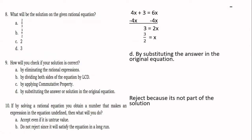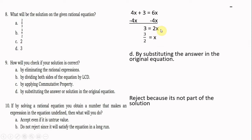Number 8: What will be the solution of the rational equation? From 4x + 3 = 6x, applying the addition property of equality, subtract 4x from both sides: 4x − 4x = 0, and 6x − 4x = 2x. So 3 = 2x. By the multiplication property of equality, divide both sides by 2. Our answer is 3 over 2, which is letter B.